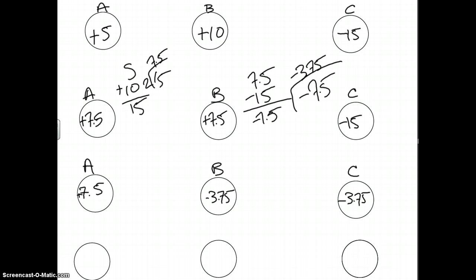Okay, for the final step, we have A and C touch and are pulled apart. We keep doing the same thing. A is 7.5 and we're combining that with negative 3.75. We add that together and divide it by 2.